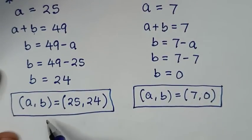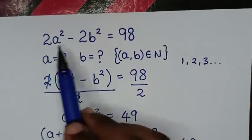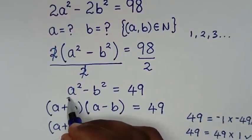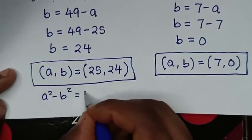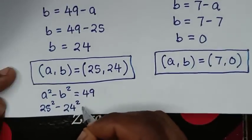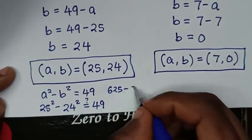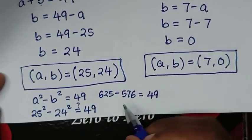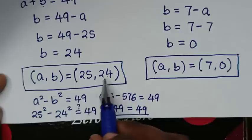Let's verify both solutions using a squared minus b squared equals 49. For the first solution: 25 squared minus 24 squared = 625 − 576 = 49. Left side equals right side, so the first solution is confirmed correct.